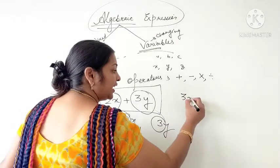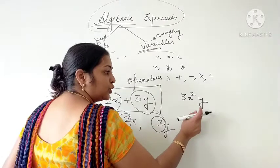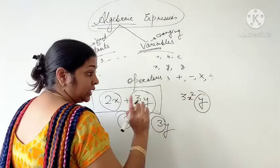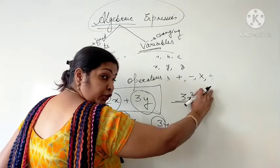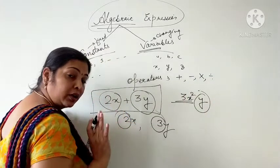If there is 3X square Y, and in this expression it is asked from you what is the Coefficient of Y, then it will be 3X square. Just hide the Term whose Coefficient is being asked, the remaining part is your Coefficient.